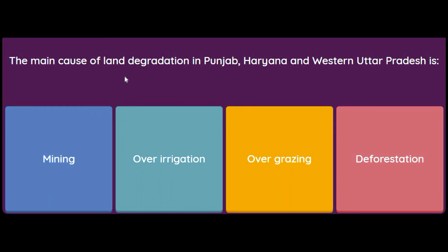The main cause of land degradation in Punjab, Haryana and western Uttar Pradesh is: mining, over-irrigation, overgrazing, or deforestation? In Punjab, Haryana and western Uttar Pradesh, land is degraded because of over-irrigation — there is excessive irrigation in these areas.